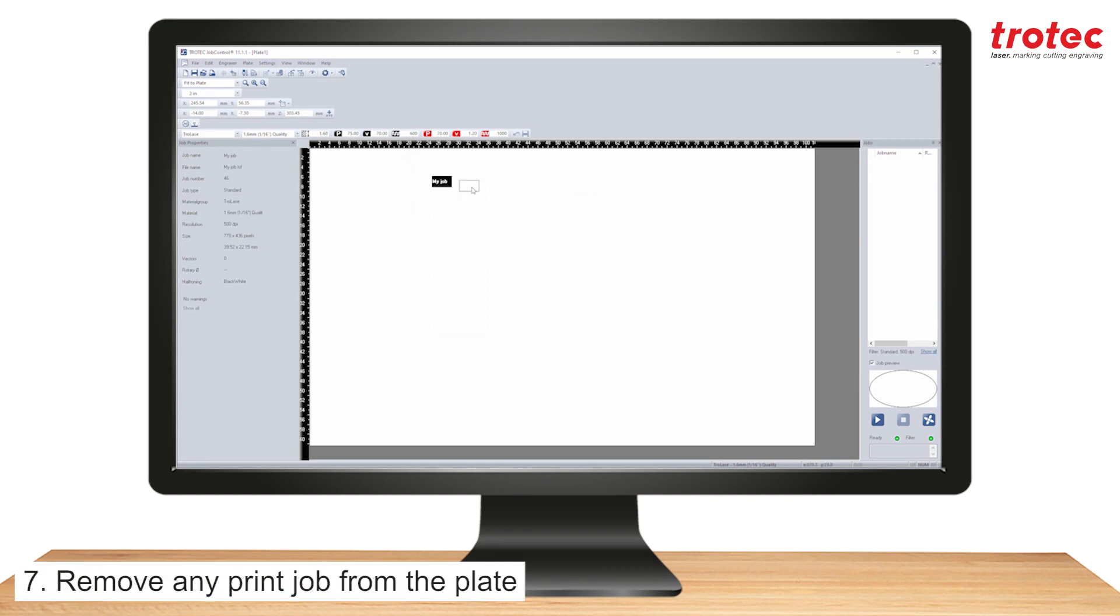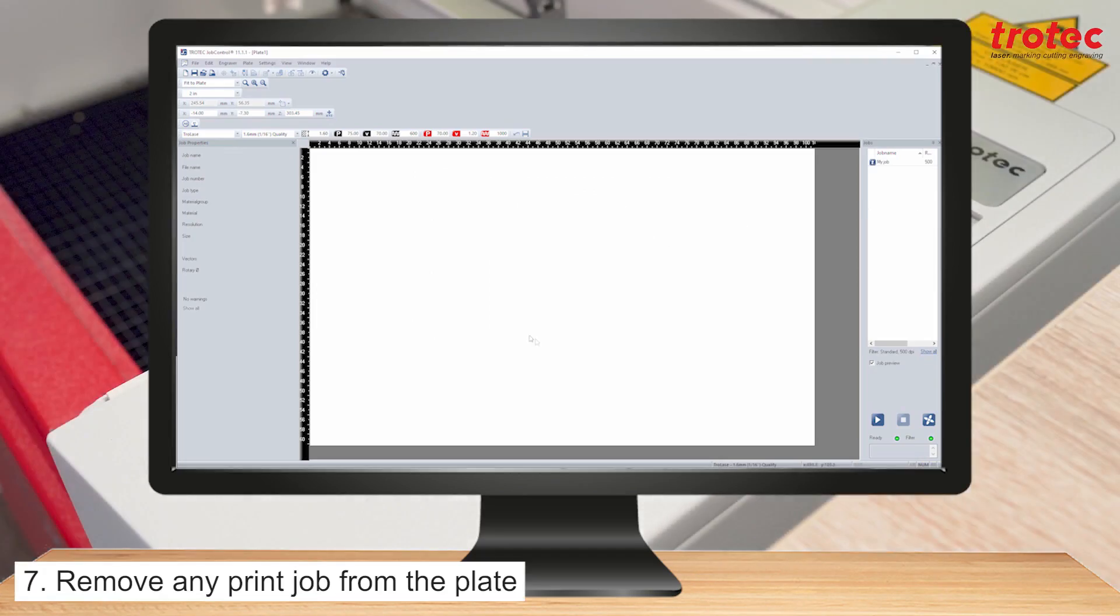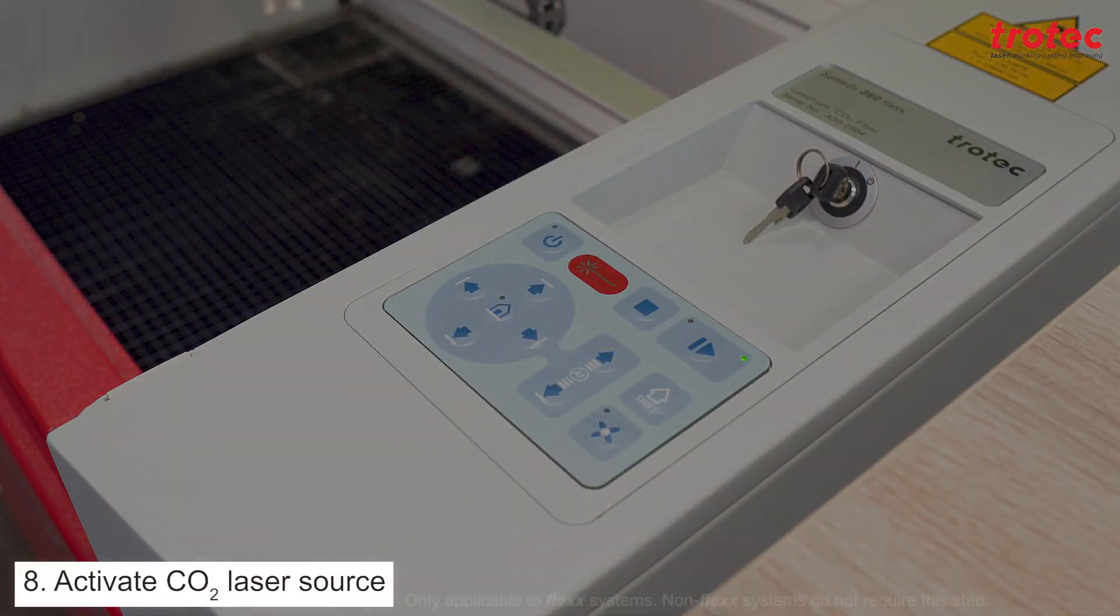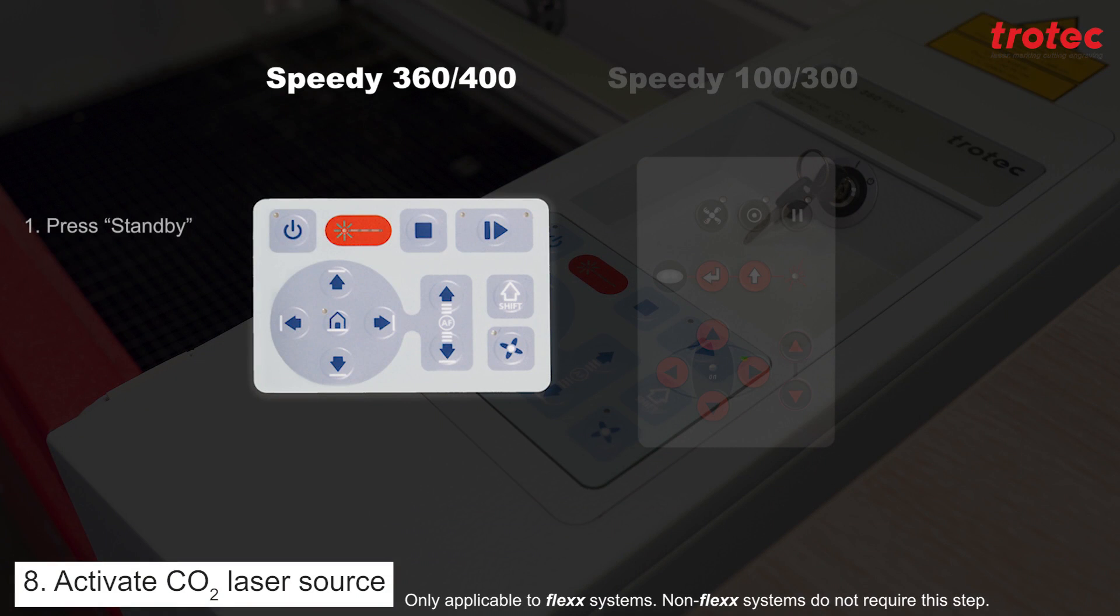Remove any print job from the plate. Activate the CO2 laser source which is only applicable to flex systems. Non-flex systems do not require this step.